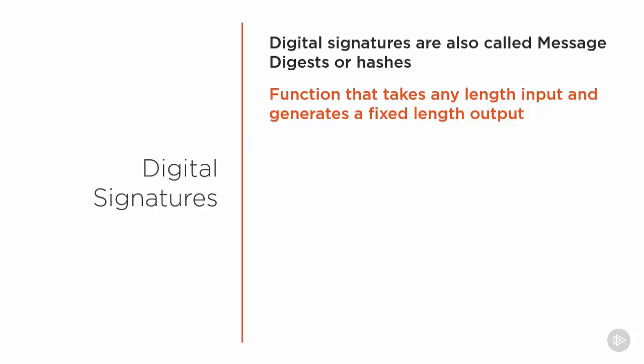One aspect of digital signatures that helps ensure the validity of the digital signature function is that it is a one-way operation, so a digital signature can't be reversed to determine the input that was used to generate the output. This is the opposite of the encryption and decryption functions that by design are used to reverse each other's output to determine their inputs.